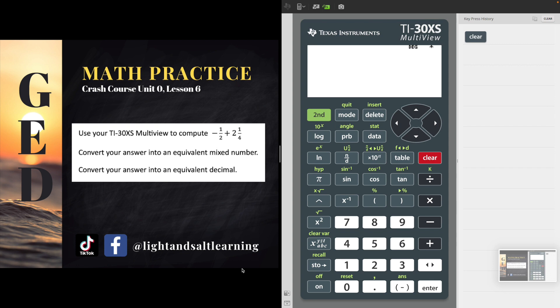It says use your TI-30XS multi-view, that's the GED calculator, to compute negative one-half plus two and a quarter.